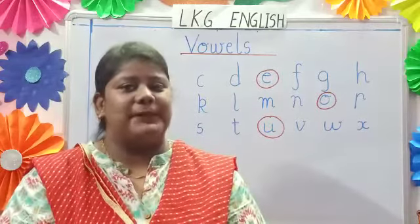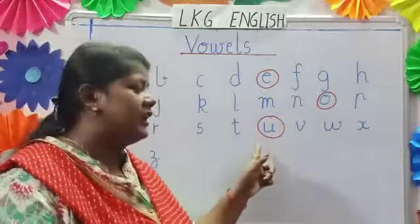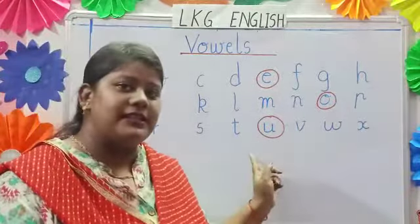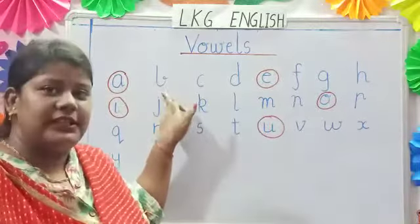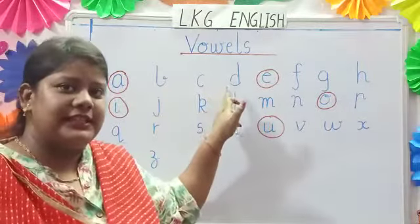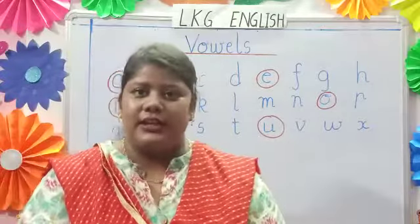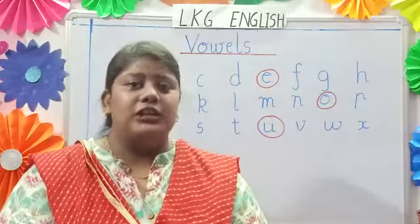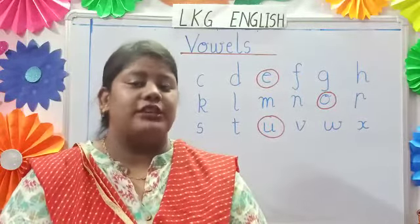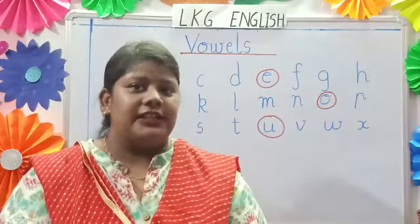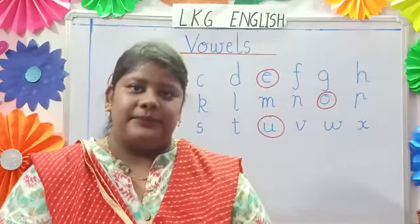Now you must be thinking, if these 5 letters are called vowels, what are the other letters like B, C, D and the other letters? What are they called? They are called consonants. What are they called, children? They are called consonants.